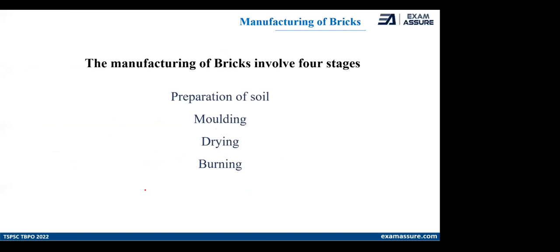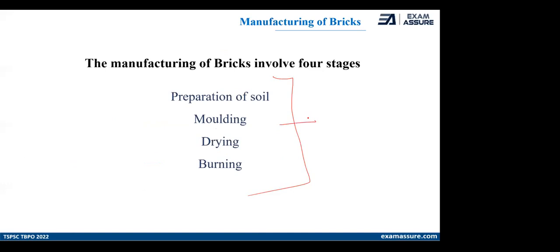The red color in the brick — brick is usually red in color — is because of the presence of iron oxide. This is the basic constituent of brick. We will quickly look into the manufacturing of brick — how they are manufactured and what different processes are involved. We are not going much deeper into manufacturing; we'll try to go deeper into the bonding part, but we will have an idea so that if any step is asked, we will be able to answer.